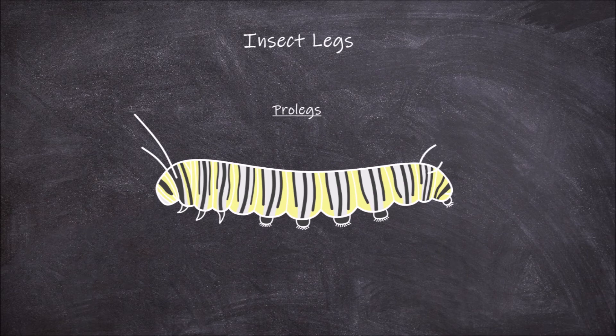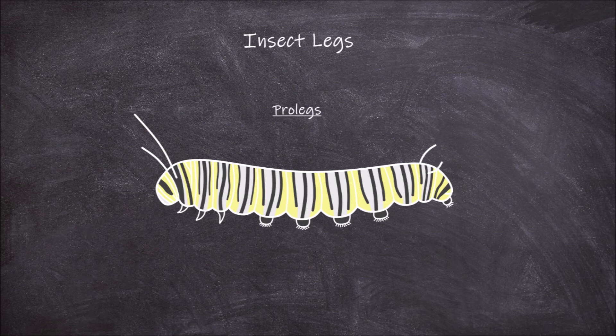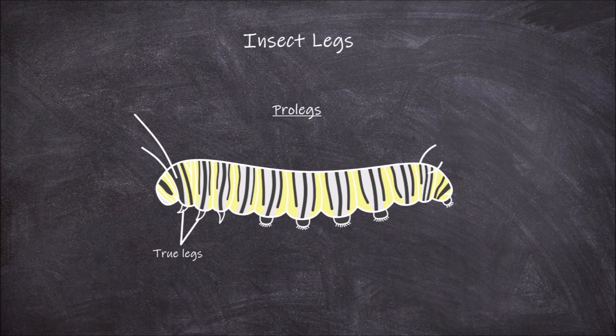The other type of legs we're going to go over are the prolegs. Prolegs are found on the abdomen on some larvae, such as in caterpillars. In this example of a monarch butterfly caterpillar, the true legs are found attached to the thoracic segments at the front of the caterpillar. The prolegs are found further back.